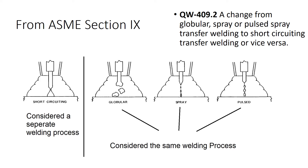For ASME Section 9, looking at QW 409.2 — a change from globular, spray, or pulse spray transfer welding to short-circuiting, or vice versa — this is basically laying out that short-circuiting transfer is considered a separate welding process. Even though it uses the same weld materials, the same gases, and the same equipment, if I change the transfer mode from globular, spray, or pulse spray into short-circuiting, it's a different process.